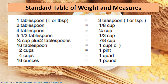The following are the Standard Table of Weights and Measures: 1 tablespoon equals 3 teaspoons; 2 tablespoons equals 1/8 cup; 4 tablespoons equals 1/4 cup; 5 and 1/3 tablespoons equals 1/3 cup; 3/4 cup plus 2 tablespoons equals 7/8 cup; 16 tablespoons equals 1 cup; 2 cups equals 1 pint; 4 cups equals 1 quart; and 16 ounces equals 1 pound.